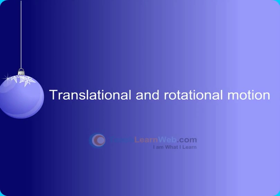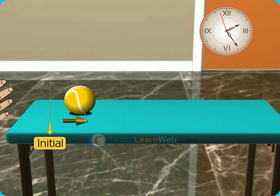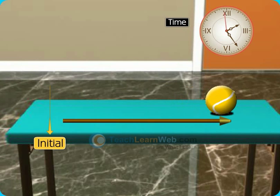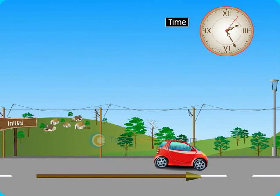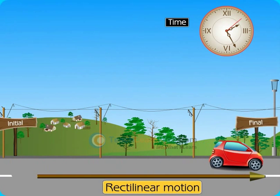Translational and Rotational Motion. Motion is the change in position of an object with time. The study of motion of objects along a straight line is called Rectilinear Motion.